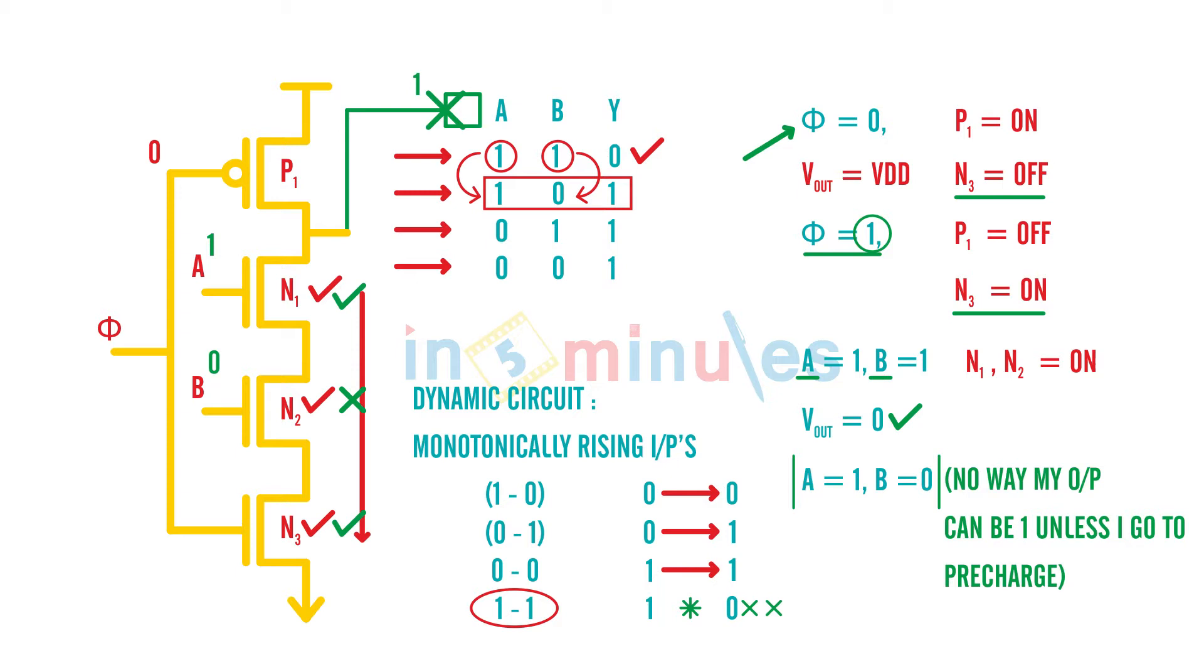...is if there are two dynamic circuits which are connected in cascade. Let's take an example of NAND again, which are operating on the same clock.